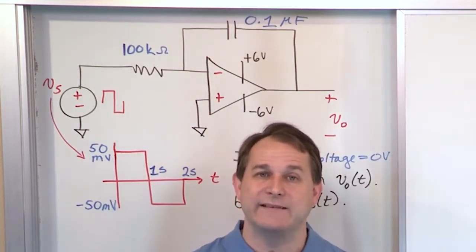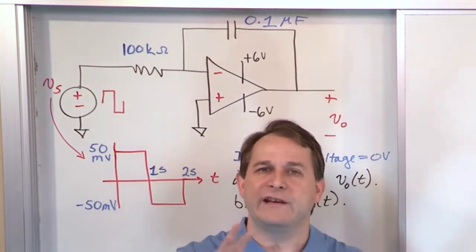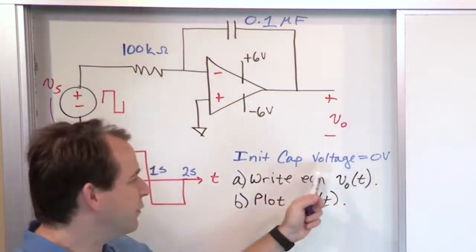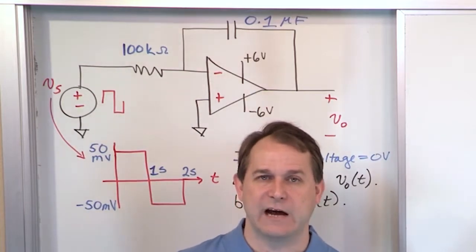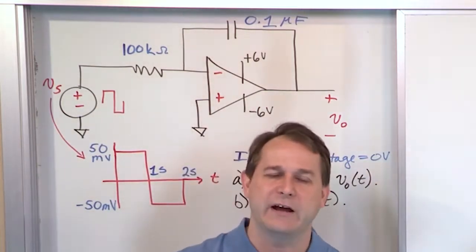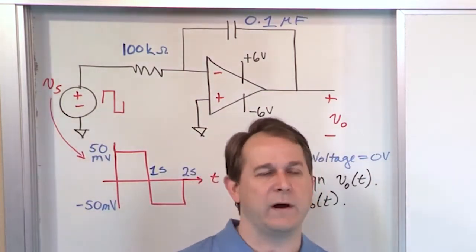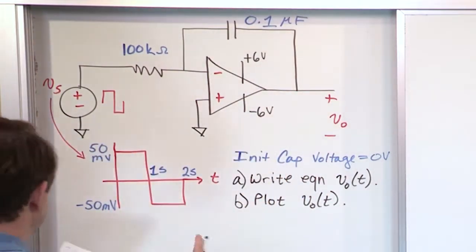Both of those equations together govern what V out is from one to two seconds over the entire region of time. Because before zero and after two seconds, there's no input voltage, so everything goes away anyway. We're going to break it up into two regions.